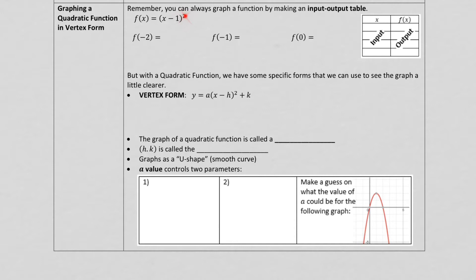So in this example here, f of x equals x minus 1 quantity squared. Because I have a squared here, now it's going to be a quadratic function. But I can generate a table by just simply plugging in some x's and getting out their y's.